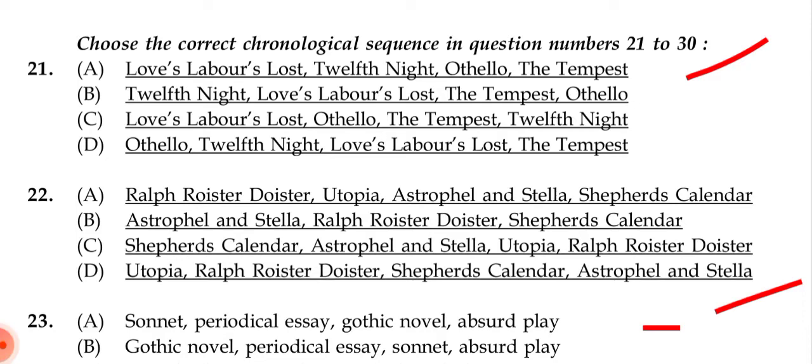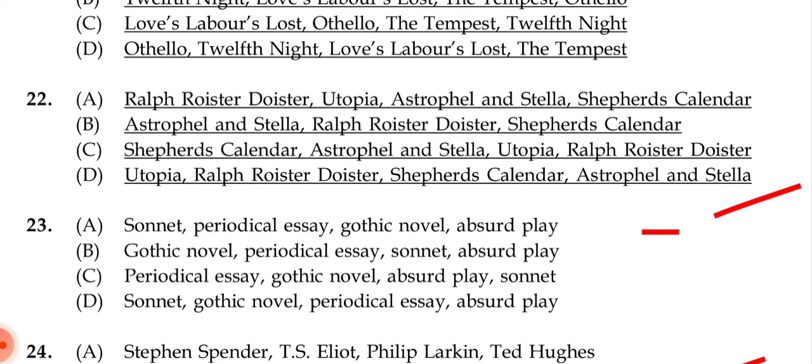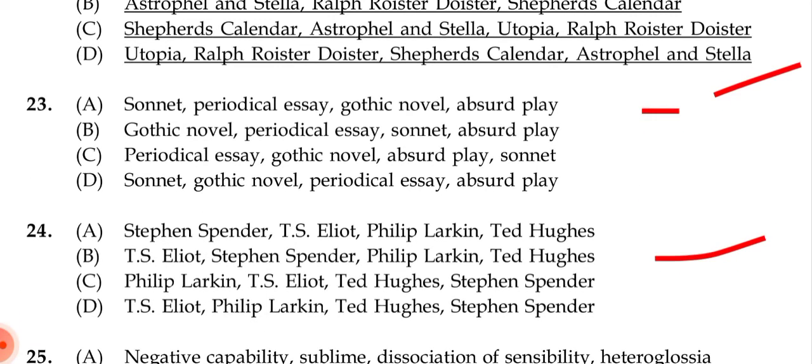Question 22: The correct answer is (d): Utopia was first published, then Ralph Roister Doister, then Shepherd's Calendar, then Astrophel and Stella.